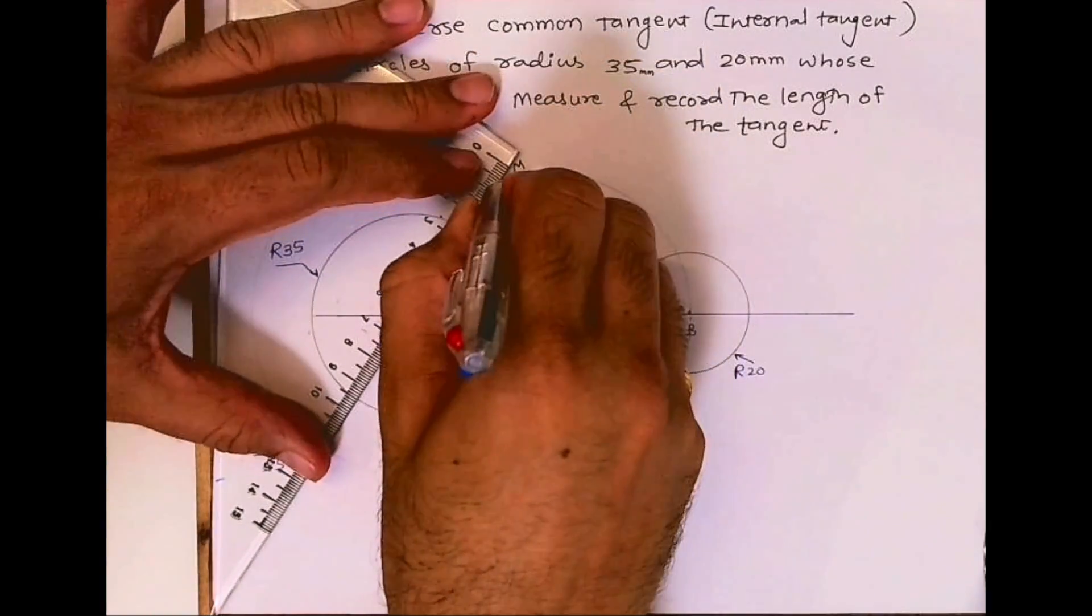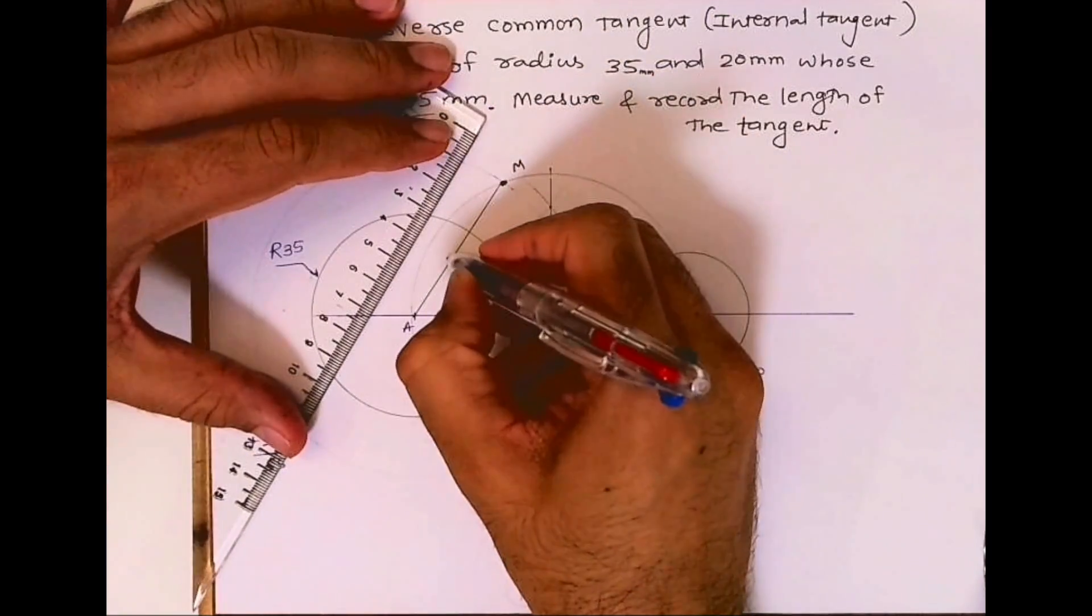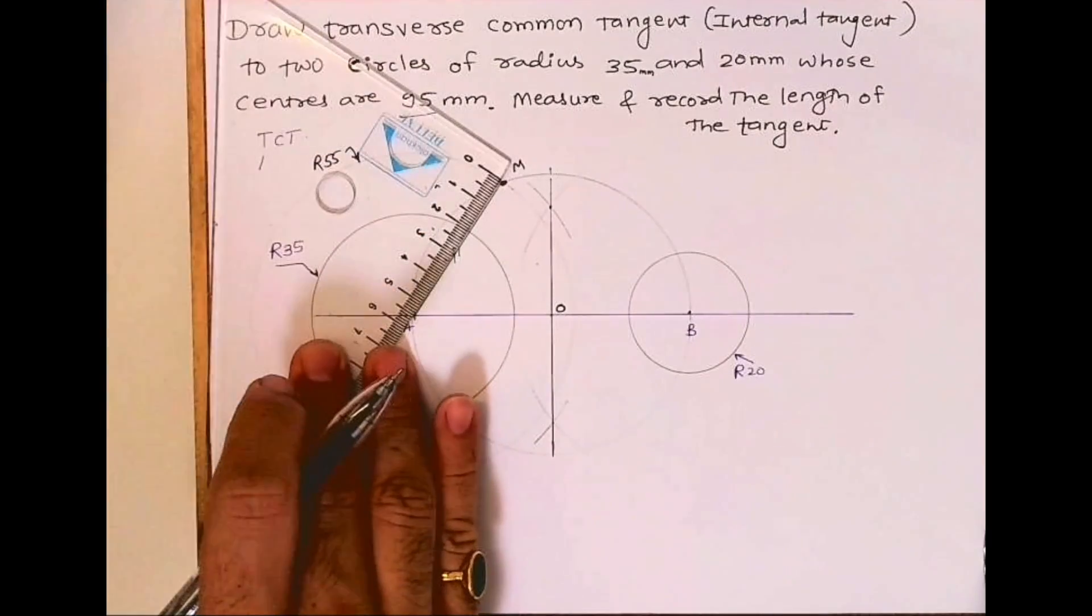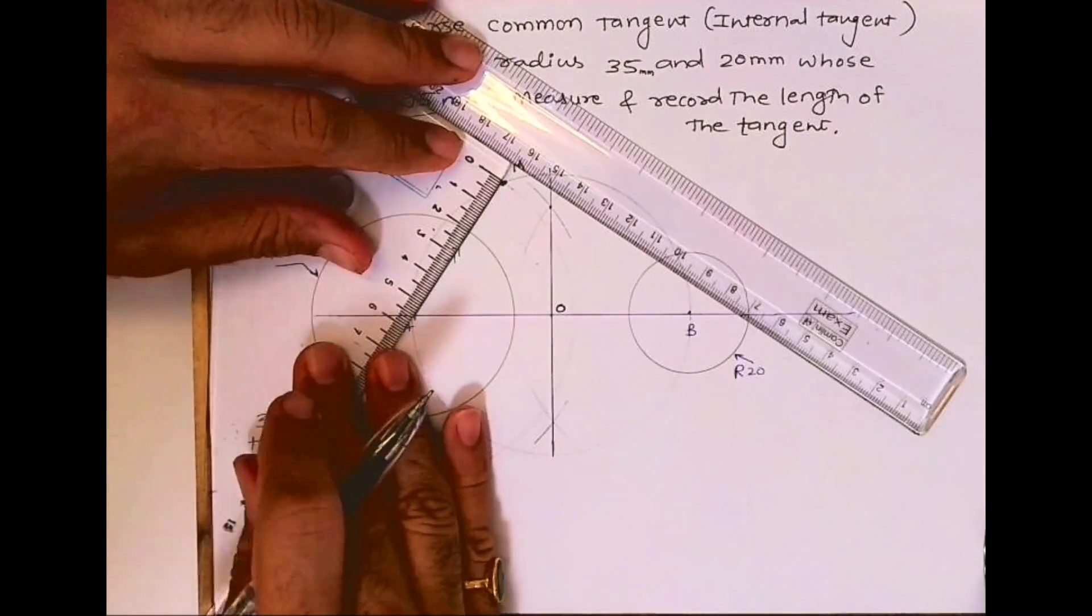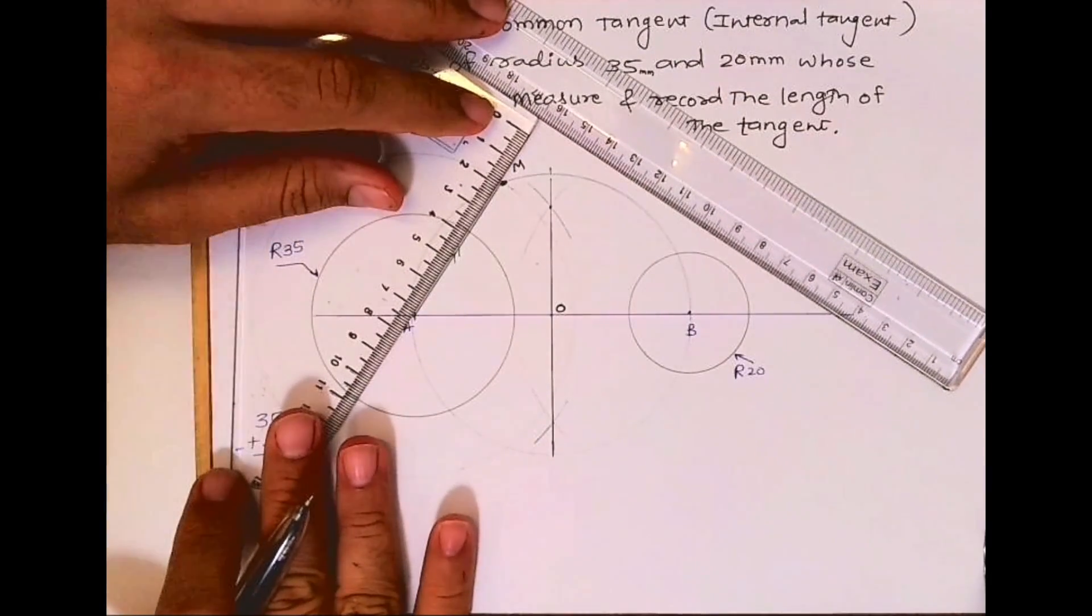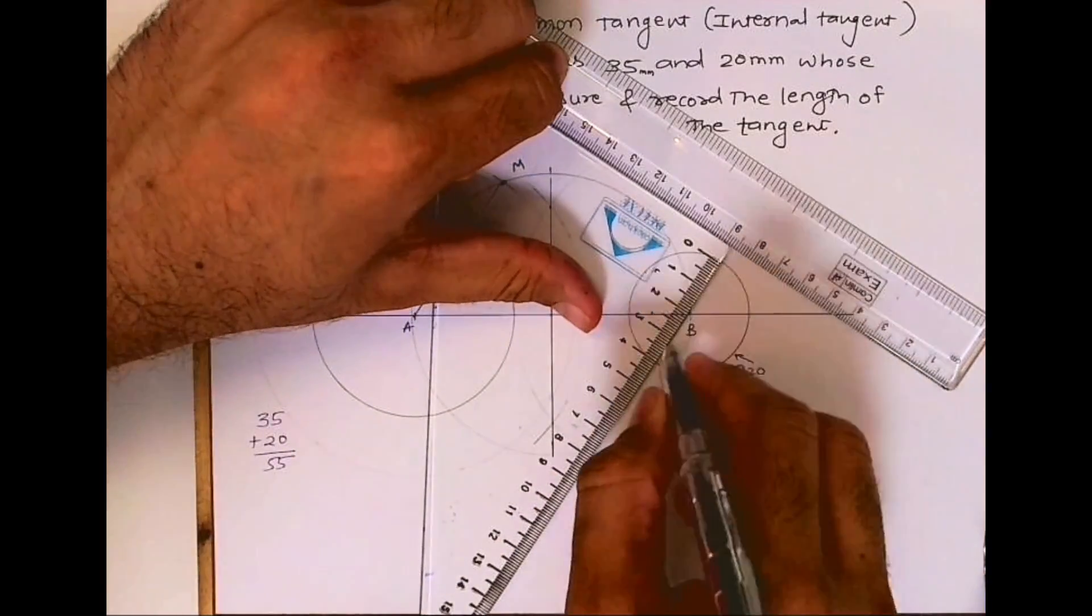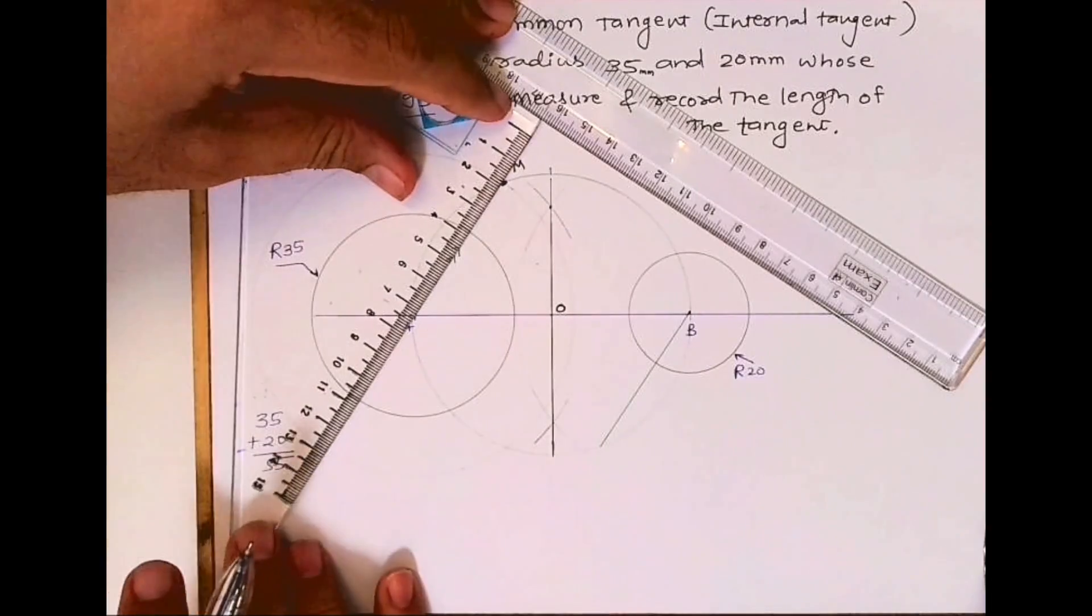Now join A to M. M is the point where radius 55 and the mid-circle intersect. Join A to M and draw a parallel line passing through B, like this.